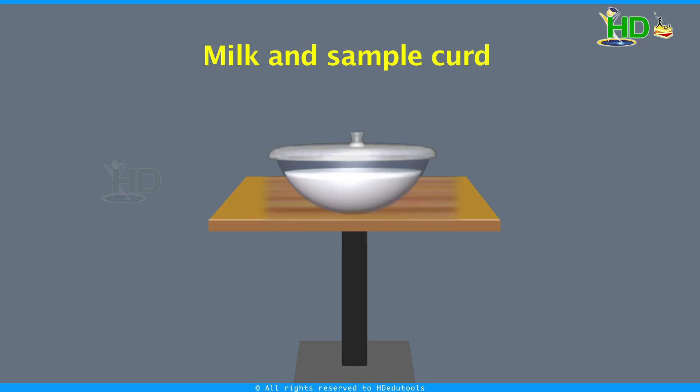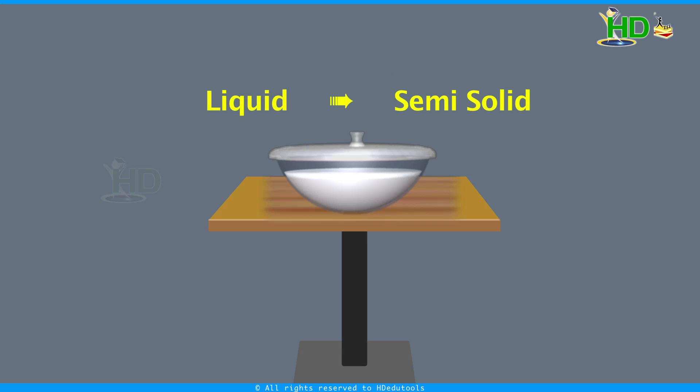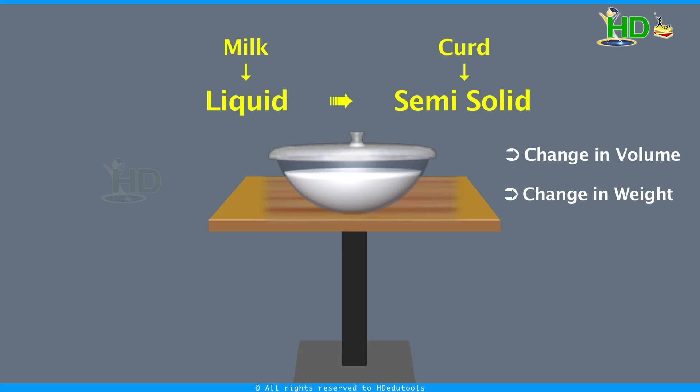After a few hours, you get curd. When milk converts into curd, you can observe the following changes: a change in state from liquid to solid — milk is in liquid state and converts into curd which is solid — a small change in volume, a change in weight, a change in smell, and a change in taste.